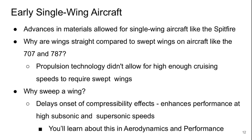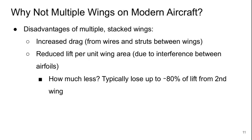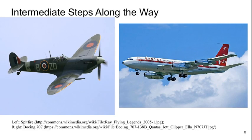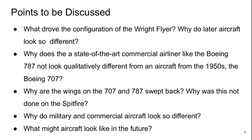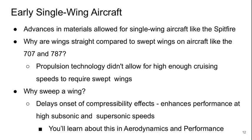But why did they have to do that? They had to do it because of limitations in materials. The Wright Flyer was basically made of wood and canvas. Moving on to early single-wing aircraft, it was primarily advances in materials that allowed for single-wing aircraft like the Spitfire. The rigidity and strength of the materials used allowed for that more efficient single wing to be adopted.